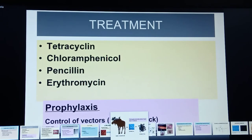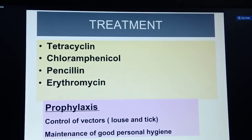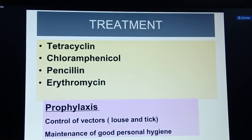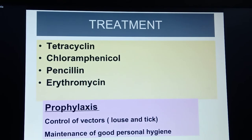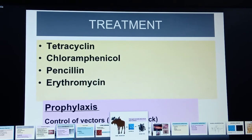The treatment for relapsing fever includes tetracycline, chloramphenicol, penicillin, and erythromycin — four categories of drugs prescribed for Borrelia recurrentis. For prophylaxis, you must control the vectors — lice and ticks — and maintain good personal hygiene to avoid ticks and vector transmission.